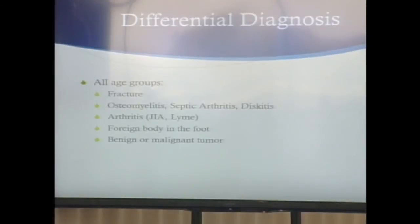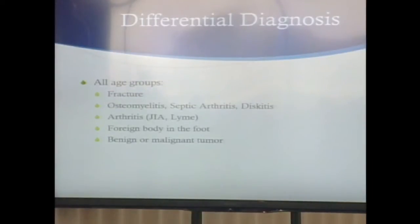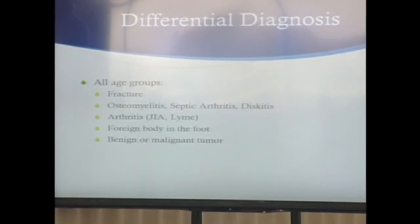In all age groups, when we see an antalgic gait, we think about fracture, some sort of infection — whether a joint infection, bone infection, or as mentioned, infection in the spine can cause an antalgic or cautious gait. Some sort of rheumatologic or other arthritis. Could be a foreign body in the foot, especially in younger kids who can't tell you there's something stuck in their foot. And of course, tumors.